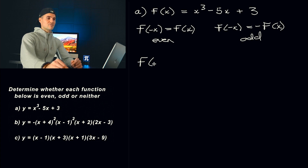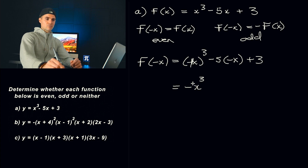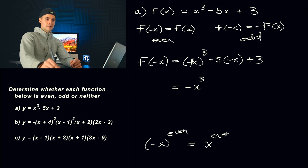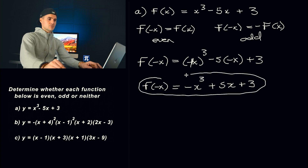First step always: let's find what f of negative x is going to be. We plug in negative x into all the x values. Negative x to the power of an odd exponent is always going to be negative x to that same exponent, because negative 1 to the power of 3 is negative 1. If the exponent is even, it would end up being positive x to that exponent. So this gives us negative x cubed. Negative 5 times negative x gives us positive 5x, and then positive 3.